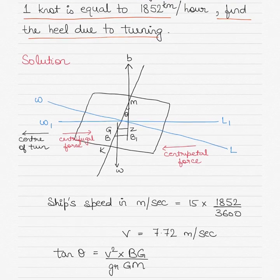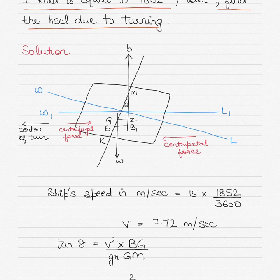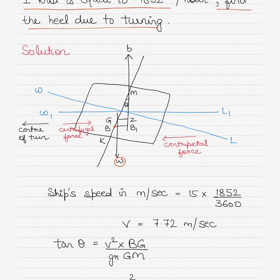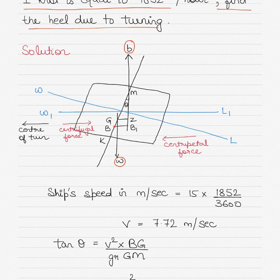Before getting into the solution, let's understand what happens when a vessel starts to turn and why it develops a heel. As you can see in this figure, the vessel is heeling to one side and the center of buoyancy, shown by the letter B, has shifted due to the heel. The displacement W acts downwards, as does the center of gravity, and the vessel's buoyancy is equal and opposite to the vessel's displacement. When a body moves in a circular path, there is an acceleration towards the center equal to v² divided by the radius of the circular path.